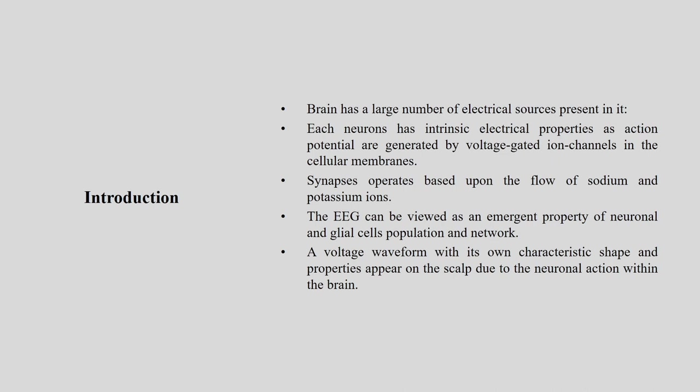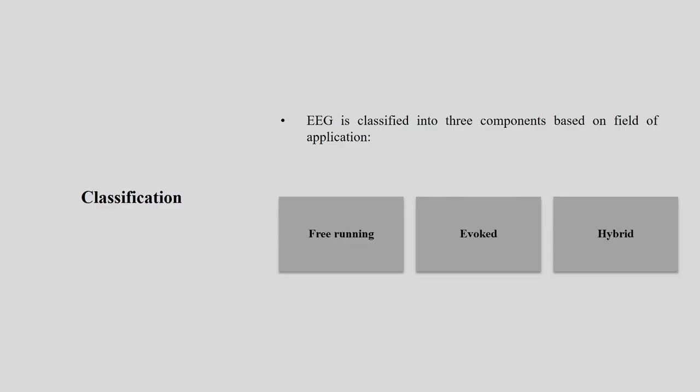EEG can be viewed as an emergent property of neural and glial cell populations and networks — a voltage waveform with its own characteristic shape appearing on the scalp due to neuronal action within the brain. There are majorly three types of EEG: free running, evoked, and hybrid.